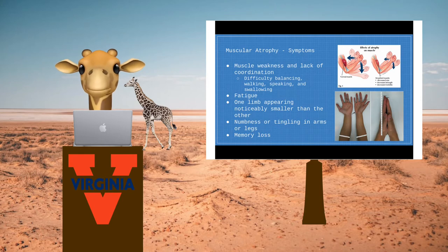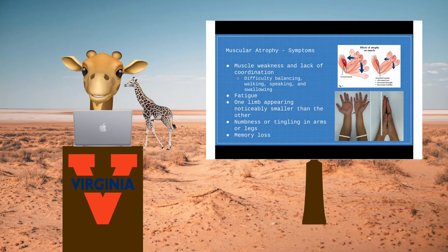Muscular atrophy often results in muscle weakness that impedes coordination, making balancing, walking, speaking, and swallowing difficult.